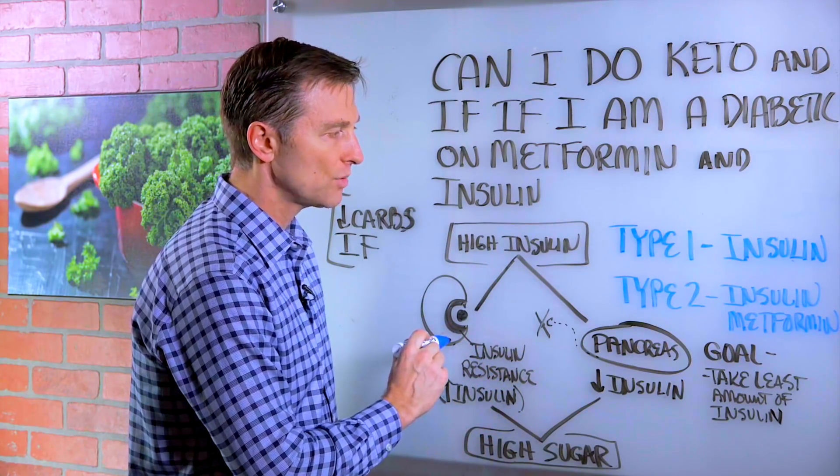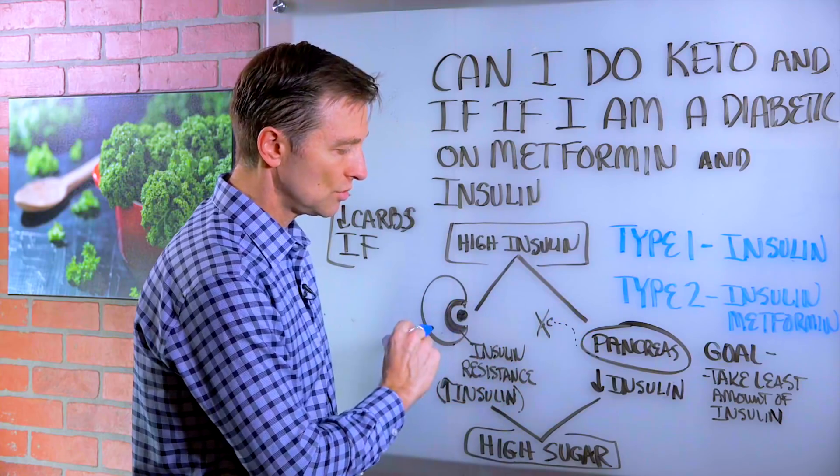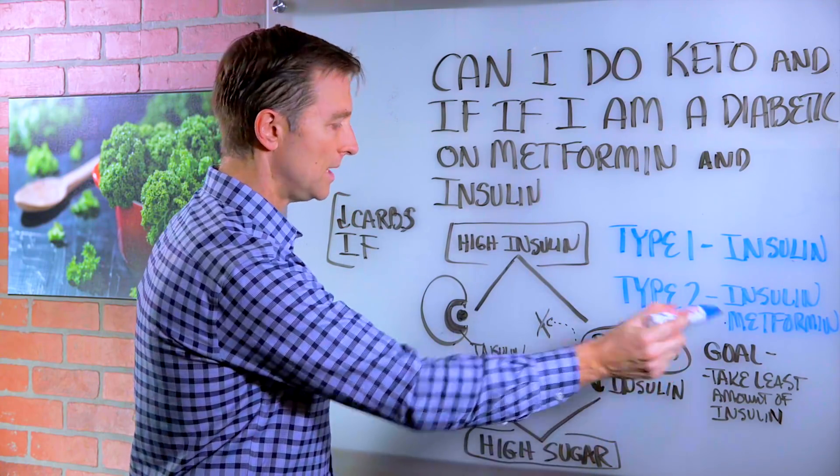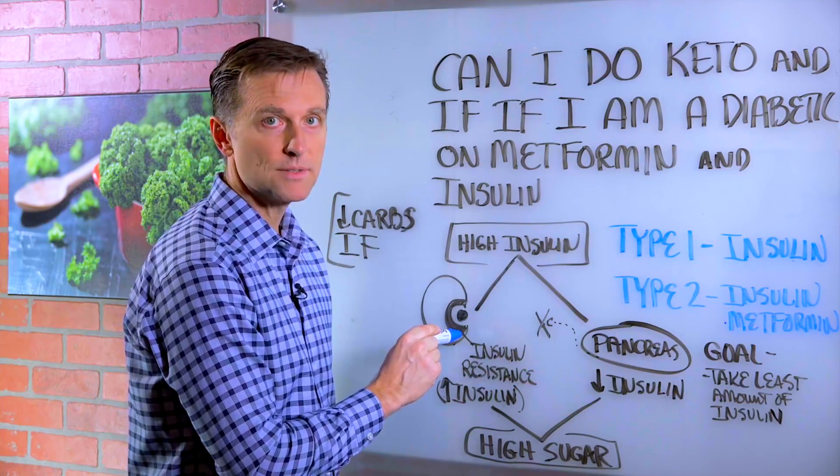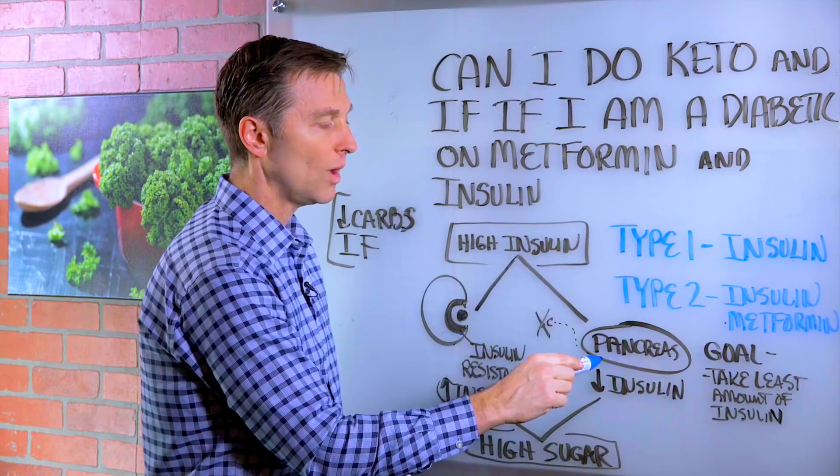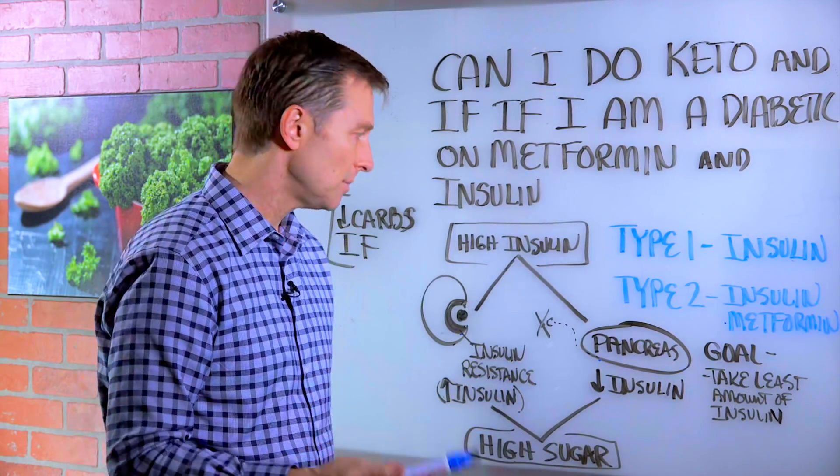But both of these situations, type 1 and type 2, have high blood sugars. Metformin makes the receptor more receptive to insulin, and insulin just gives you what the pancreas is not providing the body.